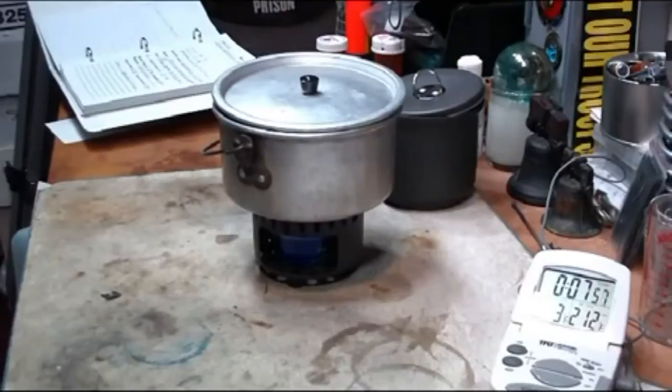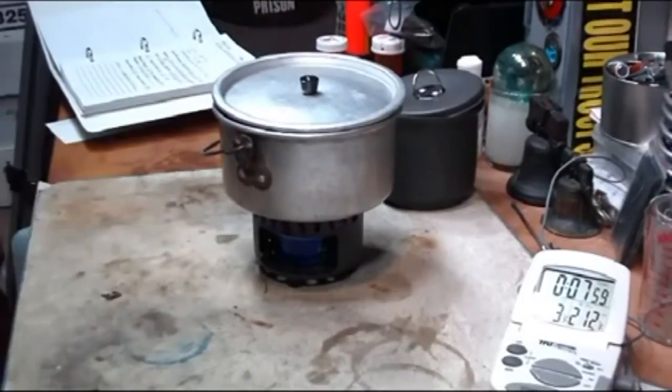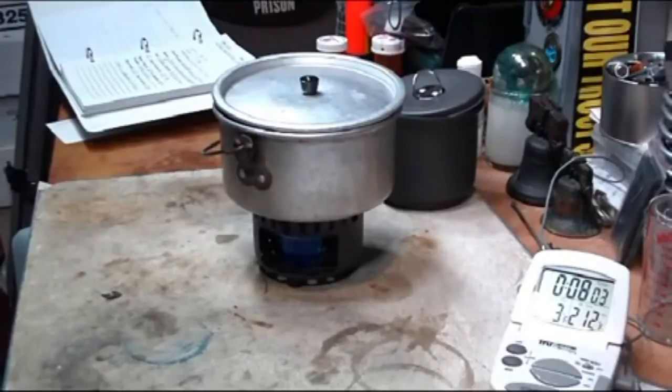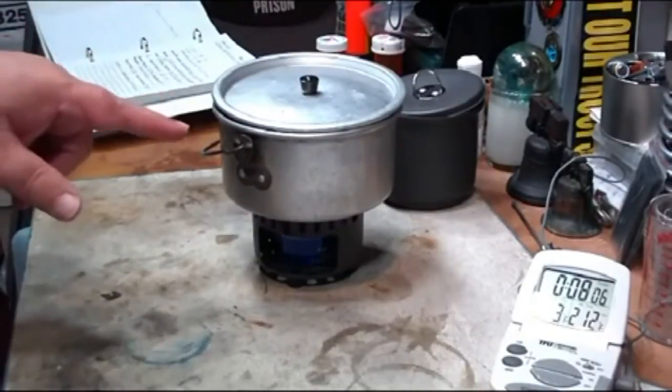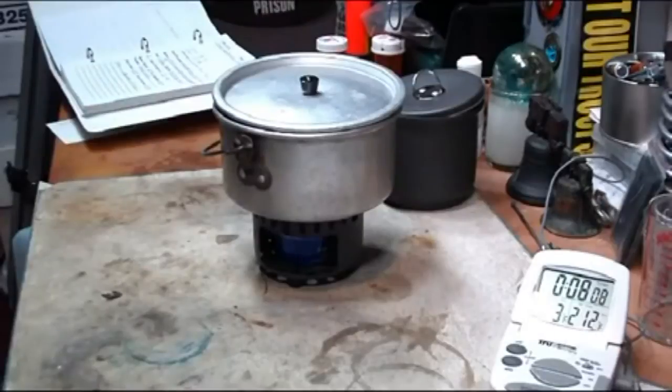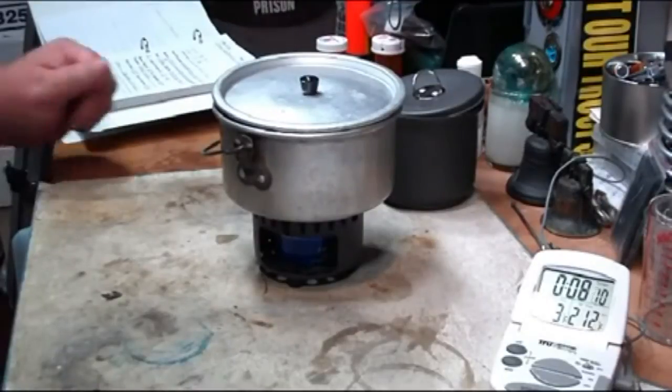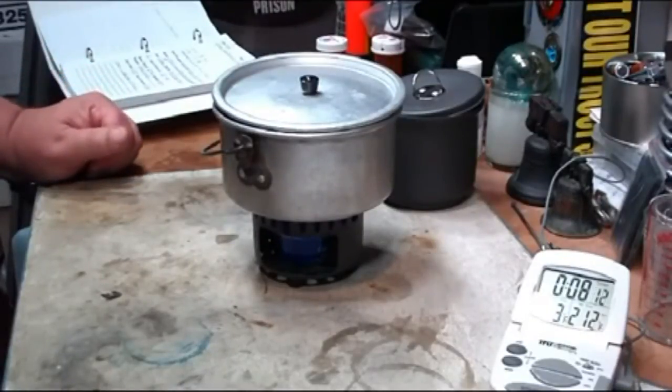So there we go. There we have another test using the Cottle burner with the Aspet solid fuel stove set burner with a Boy Scout standard pot holding two cups of water starting at 58 degrees. Came to boiling in 6 minutes 41 seconds.